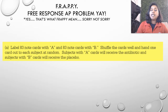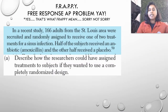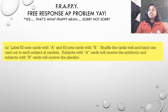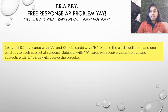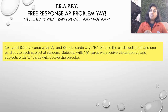We labeled 83 notecards with the letter A and 83 notecards with the letter B. Why 83 and 83? If I take 166 and divide by 2, I get 83 and 83. So we've separated our 166 adults into two groups. We shuffle those cards and hand one card out to each subject at random. By giving each subject a card at random, we've randomized what their treatment would be — we're not assigning a treatment group based on anything except randomization. Subjects with A get the antibiotic; subjects with B receive the placebo.